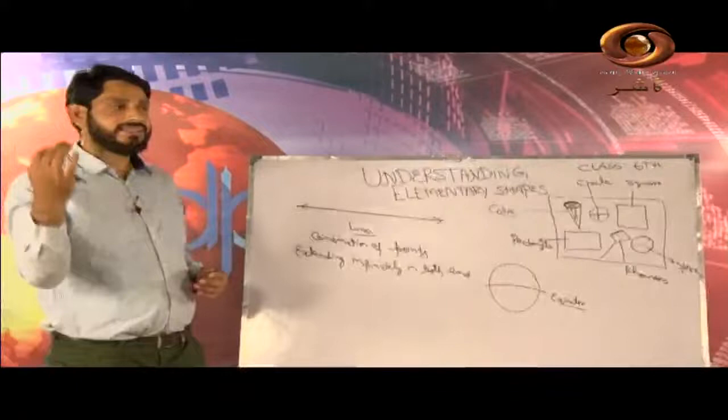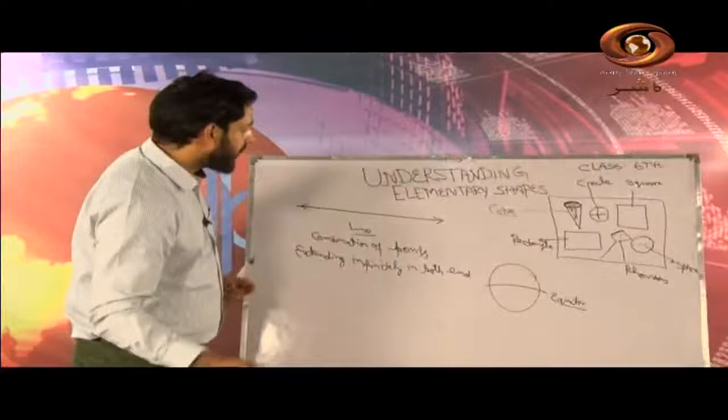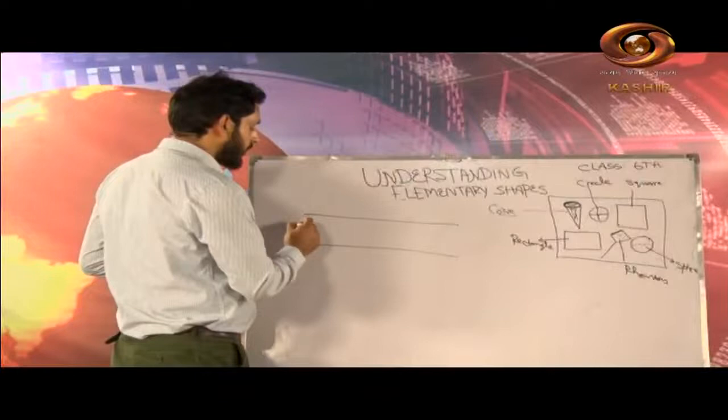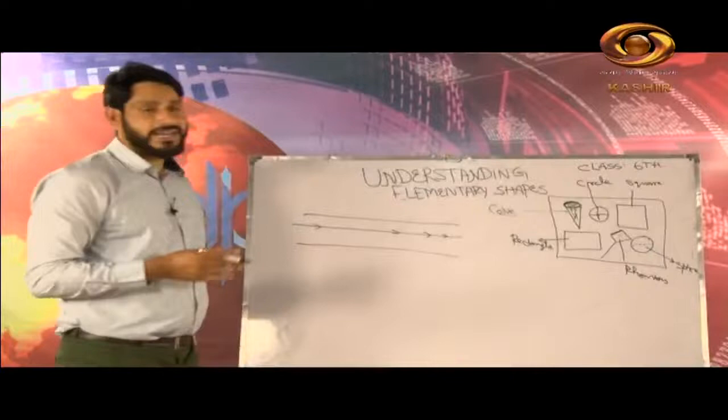The equator line — we can assume it is a line because it is extending in both directions infinitely. Similarly, if we draw a line on the national highway, suppose this is a national highway and it is going continuously, and we are drawing one line here. So, this line is not having any end point, so we can consider this as a line.